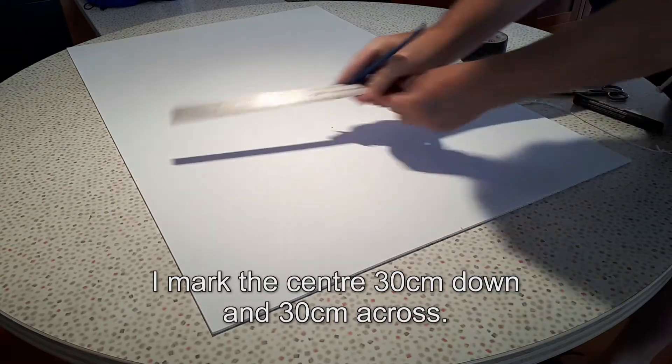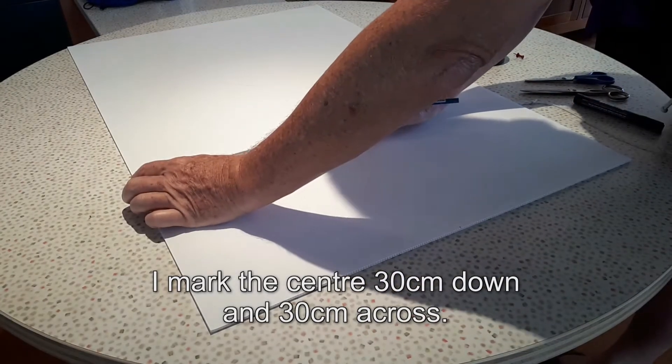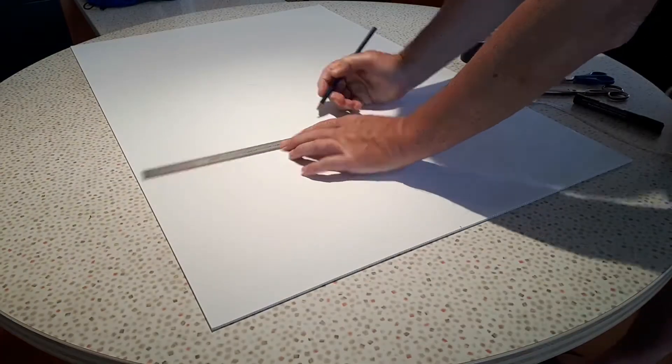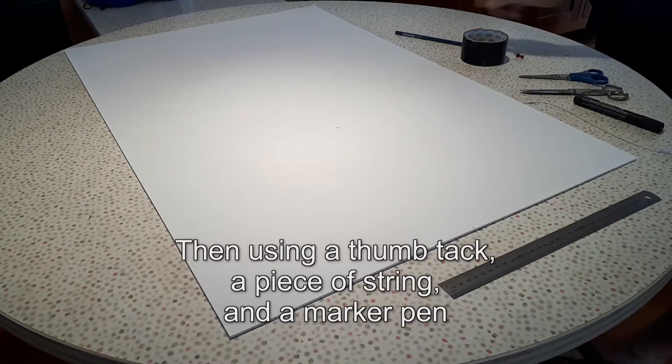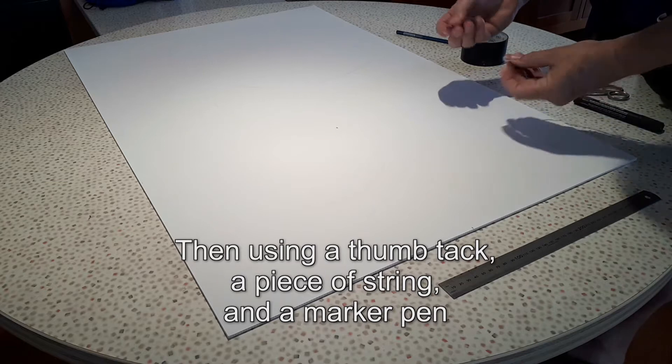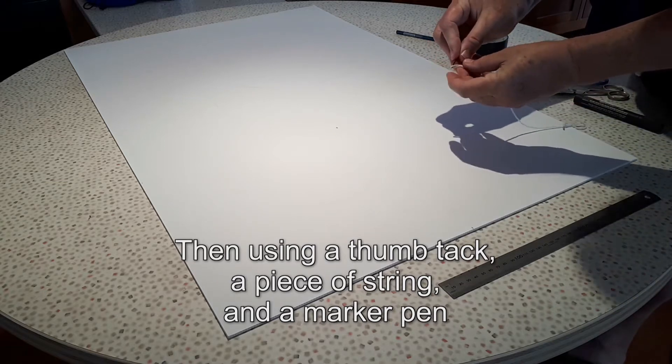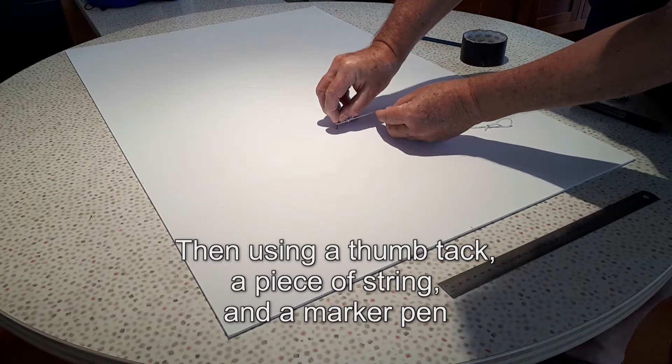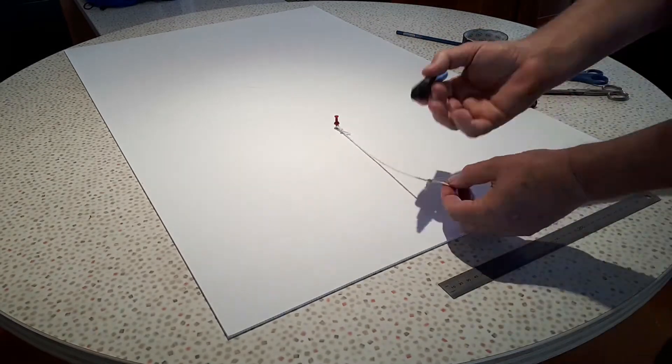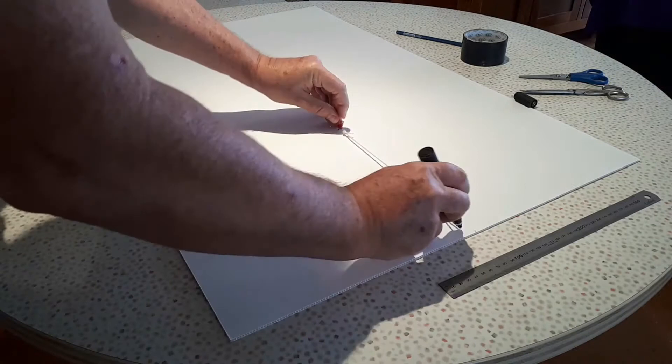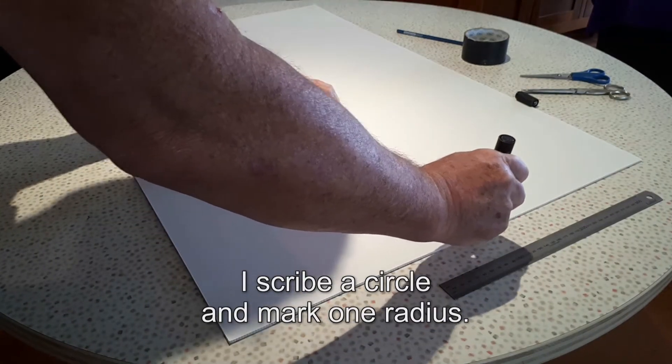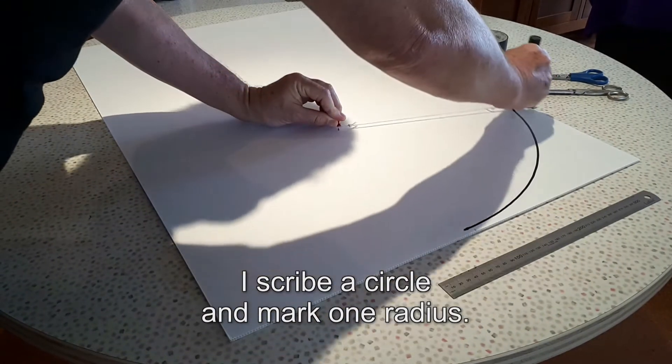Mark the centre 30cm down and 30cm across. So I've got the centre for my circle. Then, using a thumbtack, piece of string and a marker pen, I scribe a circle and mark one radius with the permanent marker.